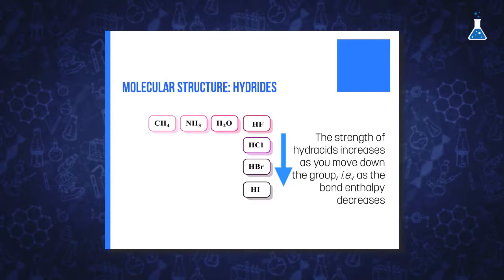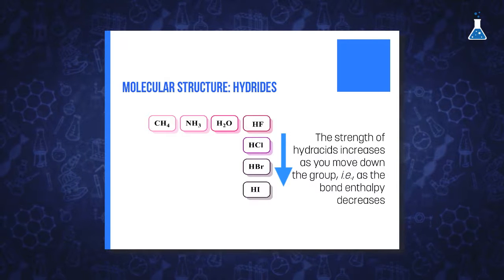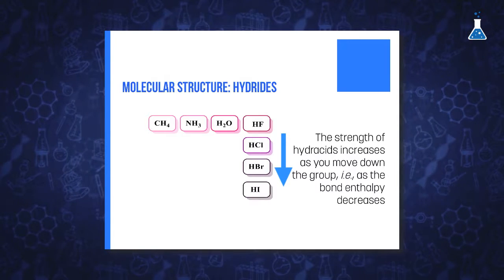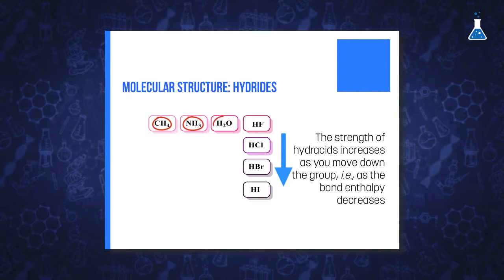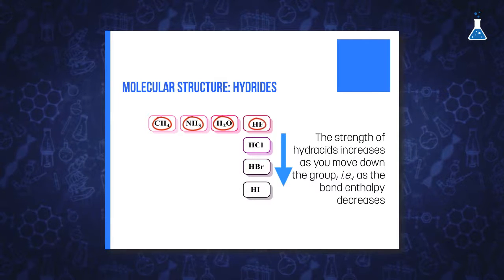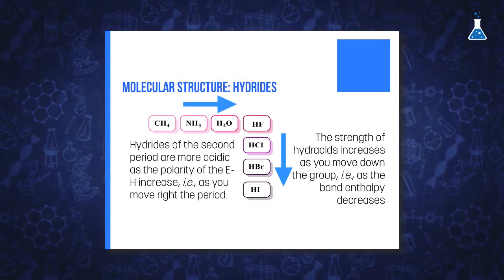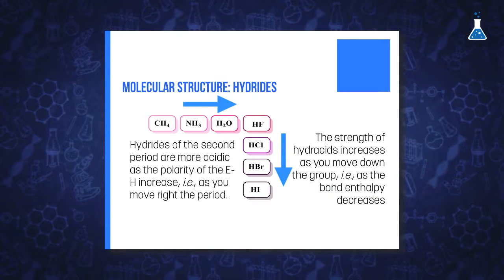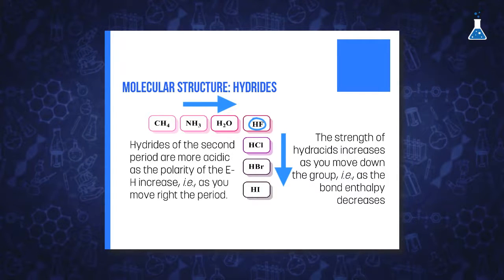What happens when we compare the trend across a period instead of a group? For example, if we compare methane, ammonia, water, and hydrofluoric acid, it is the polarity of the bond which determines the higher acidity of the species. So in this case, hydrofluoric acid will be the strongest acid.